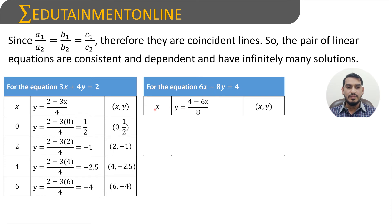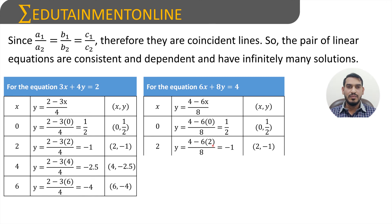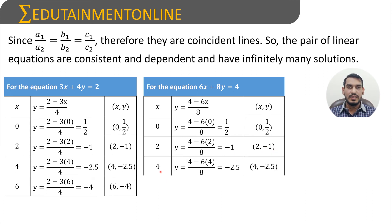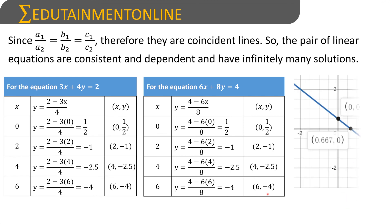For the second line 6x plus 8y equals 4, making y the subject: y equals 4 minus 6x by 8. When x equals 0, y equals 4 by 8 equals 1 by 2, giving point (0, 1/2). When x equals 2, y equals 4 minus 12 by 8 equals minus 8 by 8 equals minus 1, giving point (2, -1). When x equals 4, y equals minus 2.5, giving point (4, -2.5). When x equals 6, y equals 4 minus 36 by 8 equals minus 4, giving point (6, -4).